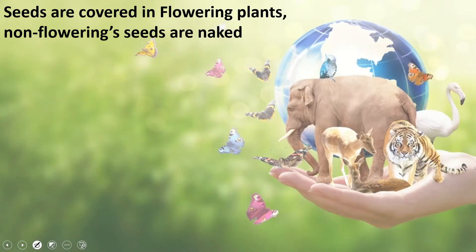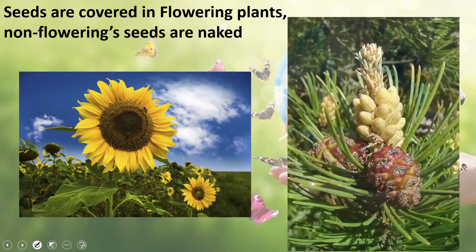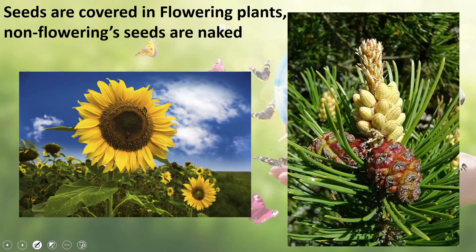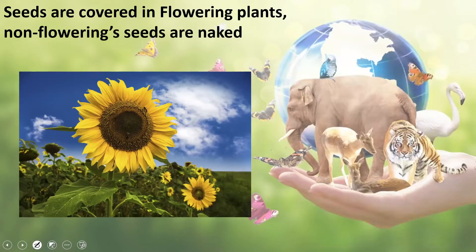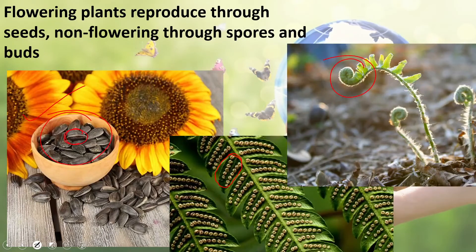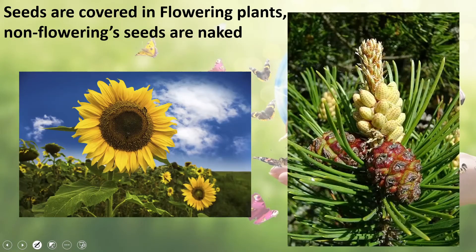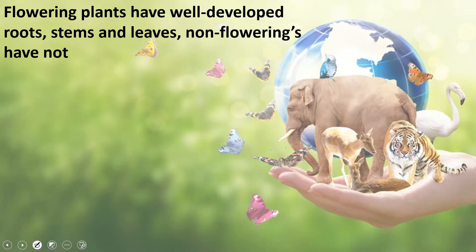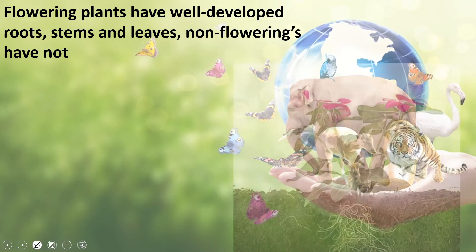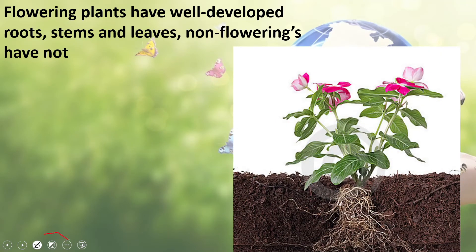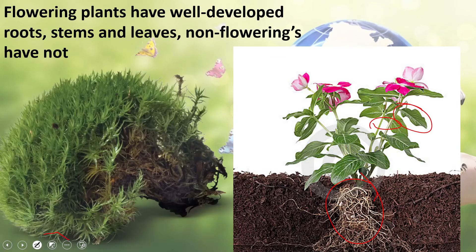Flowering plants have enclosed seeds — you can see that the sunflower seeds are closed. Non-flowering plants, however, have seeds that are not enclosed in anything. Next, flowering plants have a well-developed root, stem, and leaf system whereas non-flowering plants do not. Here you can see the flowering plant has proper roots, stem, and leaves.